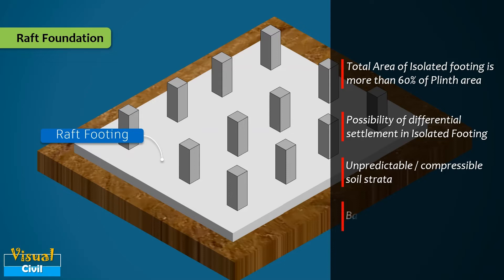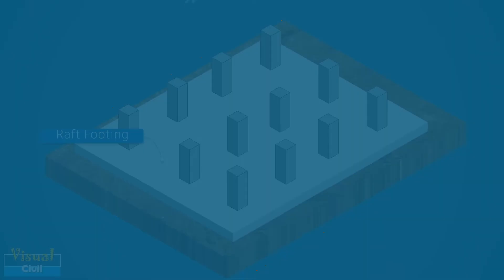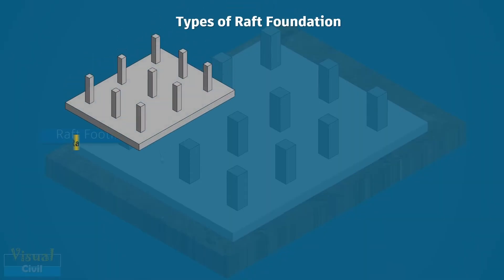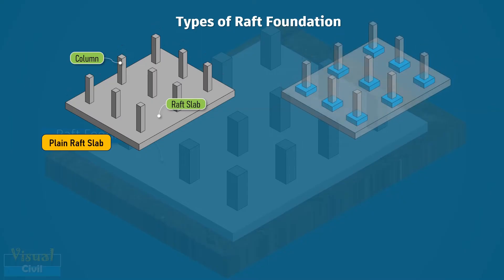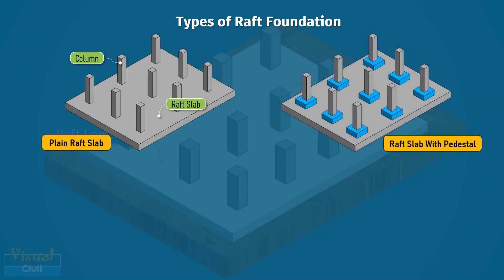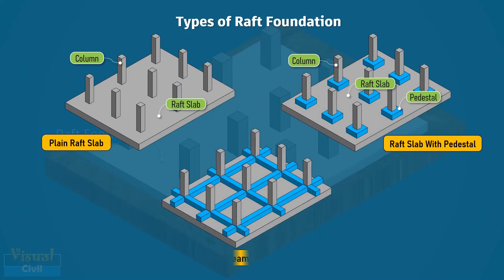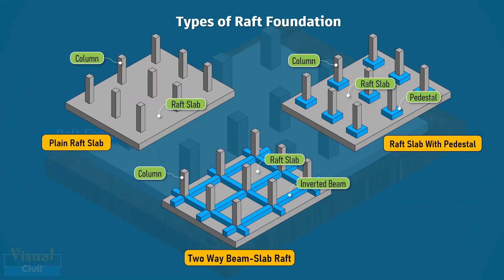A fourth condition for raft foundation is when a basement is to be constructed. Generally, raft foundation can be constructed as a plain raft slab, a raft slab with pedestal, or a two-way beam slab raft foundation.